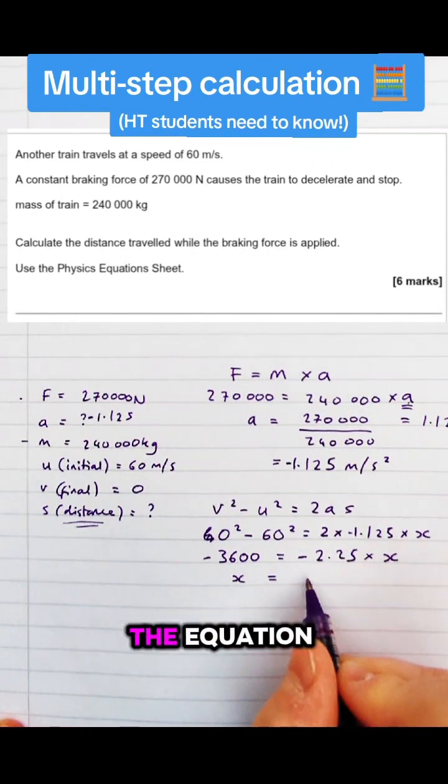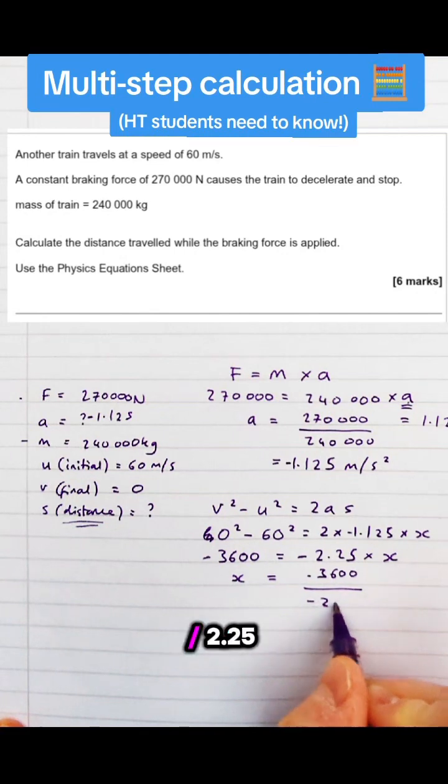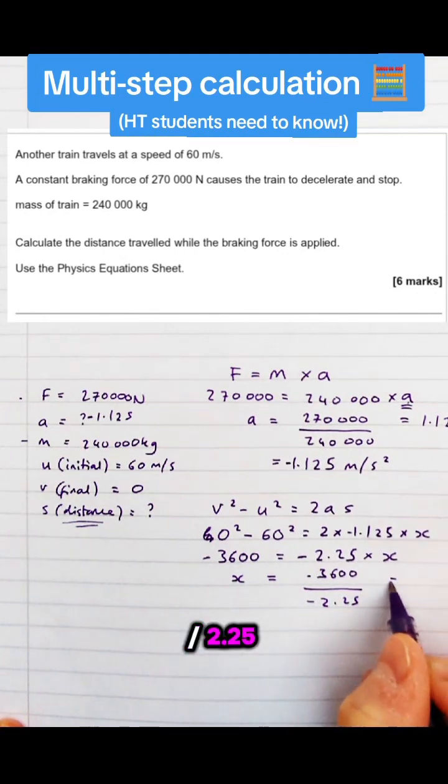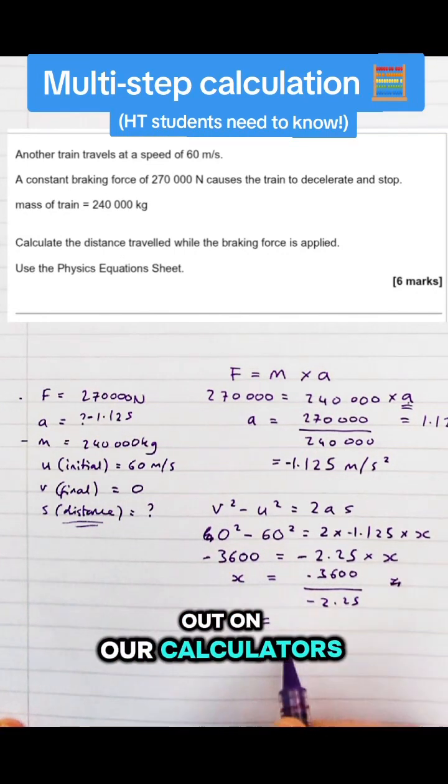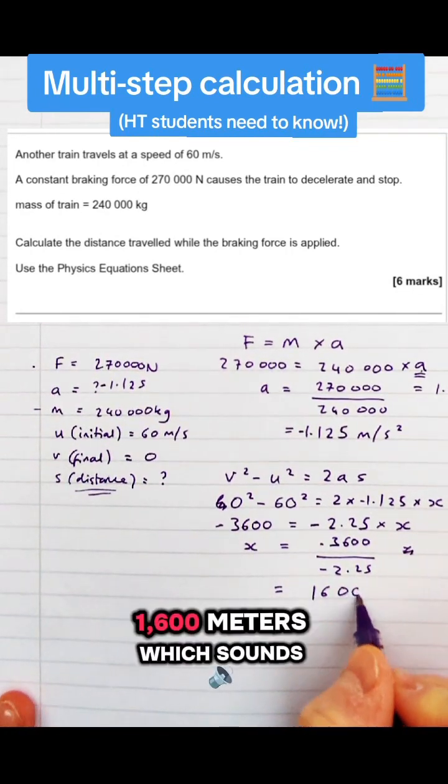Because I've got negatives on both sides of the equation, they can cancel. And we then have 3,600 divided by 2.25, which if you work that out in our calculator to find the overall distance, is going to be 1,600 meters.